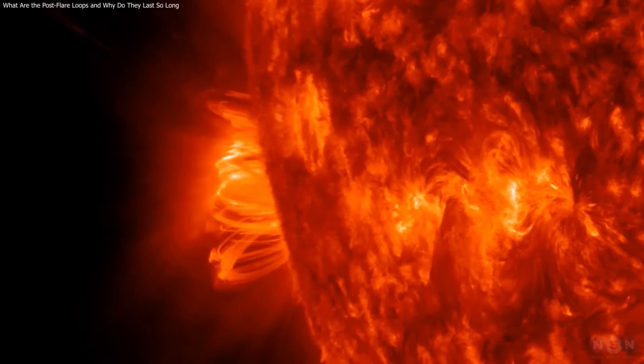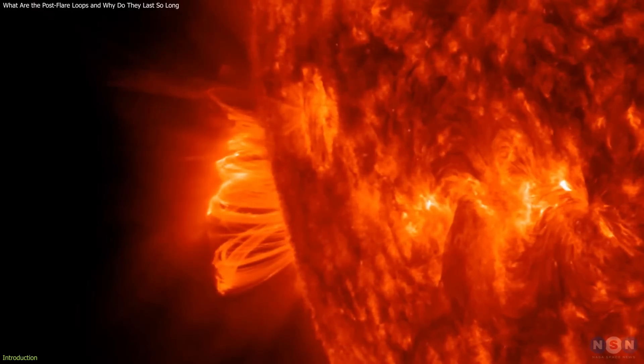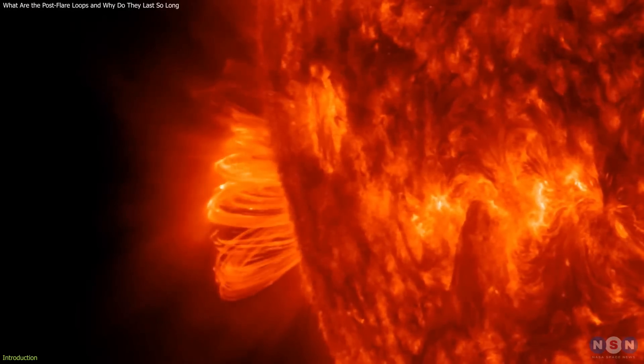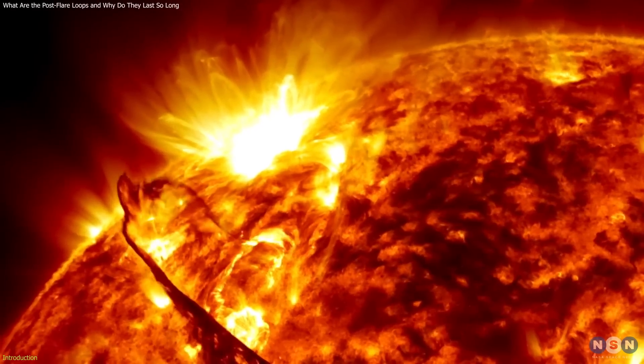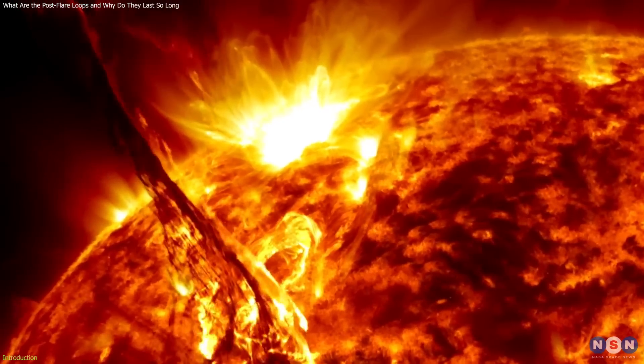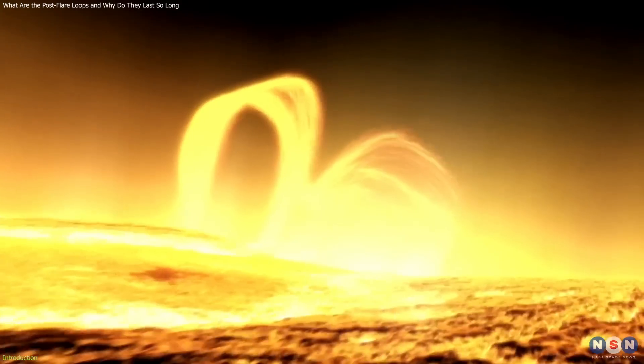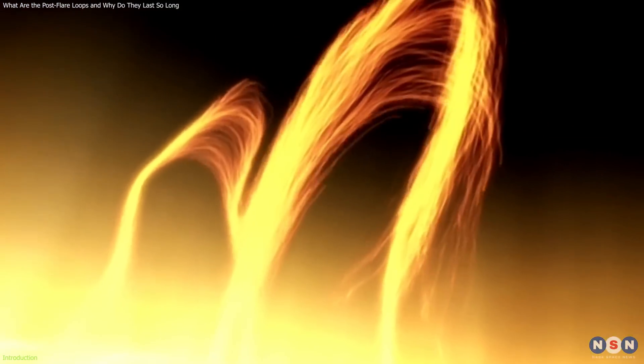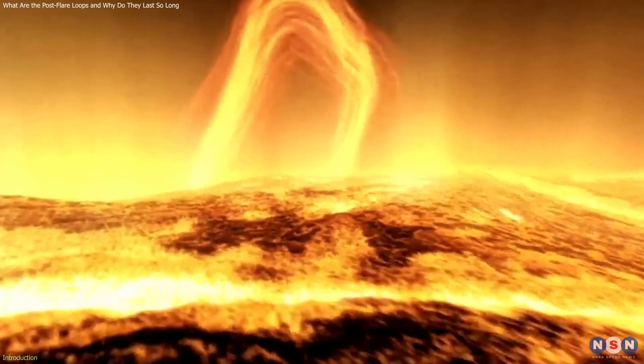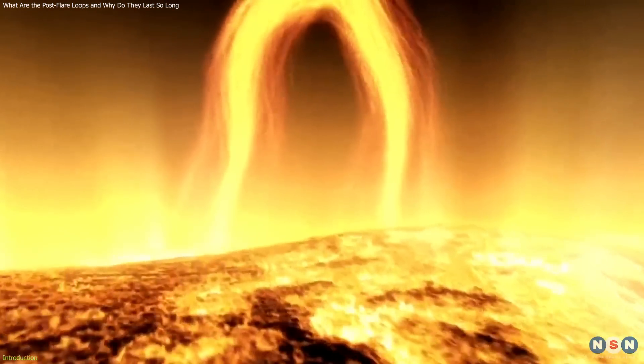A series of gigantic yet eerily faint plasma loops temporarily rose above our home star's surface after a powerful solar flare exploded from the sun on Monday, as stunning new photos show. These loops linger like ghostly echoes of the departed solar storm, but scientists still don't know exactly how the ethereal remnants take shape.